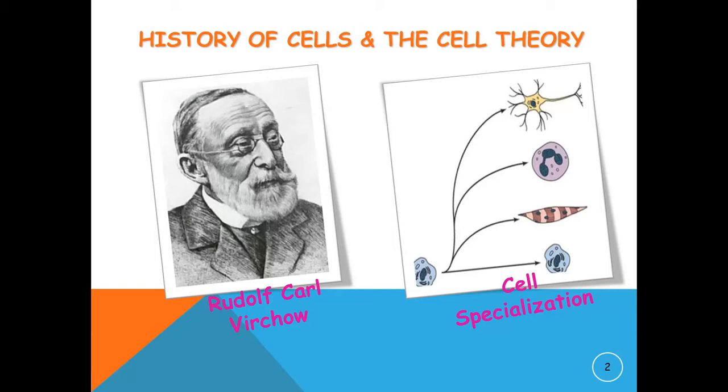Firstly, we will take a look at the history. Rudolf Karl Virchow was a German physician, pathologist, biologist, writer, and politician. He is known as the father of modern pathology and the founder of social medicine. In 1855, Virchow published a statement based on his observations: omnis cellula e cellula, which means that all cells arise from pre-existing cells.